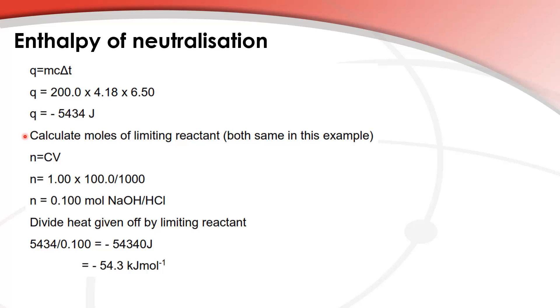Next we calculate the moles of limiting reactant. In this example they are both the same number of moles. So we use N equals CV and we end up with 0.100 moles of NaOH or HCl and then we divide the heat given off by the limiting reactant.